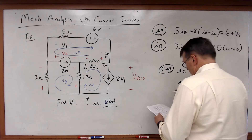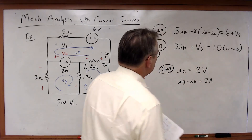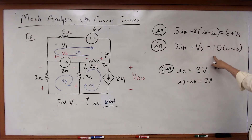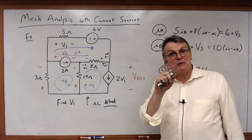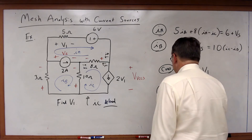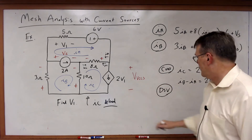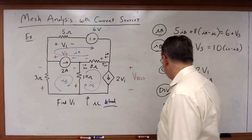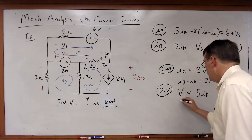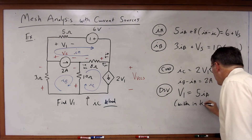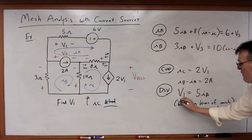Hold on — I'm missing something. There are actually 5 unknowns, because I've got V1. So the unknowns are IA, IB, IC, VS, and V1. I have a dependent source, so I need a dependent source variable equation. Almost forgot! You always have to remember: KVL plus constraints plus dependent source variable equations. V1 is equal to 5IA — the dependent source variable must be written in terms of mesh currents. That's my fifth equation.